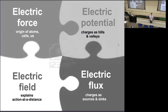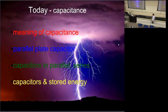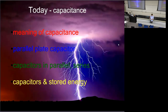We're going to be looking at capacitors, resistors, batteries, and building circuits from capacitors, resistors, and batteries. To understand electricity in that context, we'll need to use these tools of electrical potential and electrical flux. Today is all about capacitors and what we call capacitance. I want to talk about the meaning of capacitance, a particular capacitor called a parallel plate capacitor, arrangements of capacitors in parallel and series, and energy stored in capacitors.